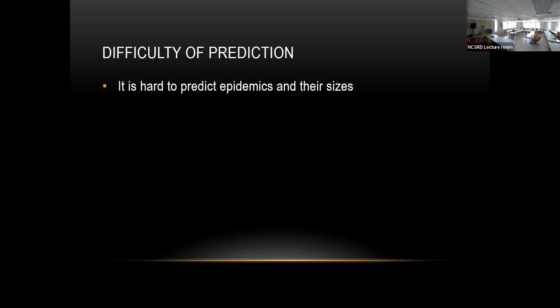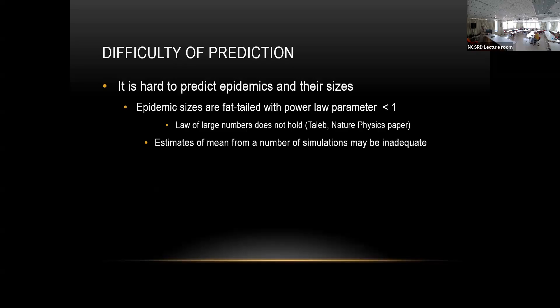It's hard to predict epidemics and their sizes. For example, Taleb in a Nature Physics paper argued that epidemic sizes are fat-tailed with power law parameters less than one, which means the mean doesn't exist.